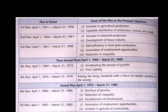After the Third Plan we had a three-year gap from 1966 to 1969, during which we had annual plans. The Fourth Plan, from 1969 to 1974, focused on accelerating the process of growth. The Fifth Plan, from 1974 to 1979, focused on raising the living standards of the weaker sections of society. After that we again had annual plans.